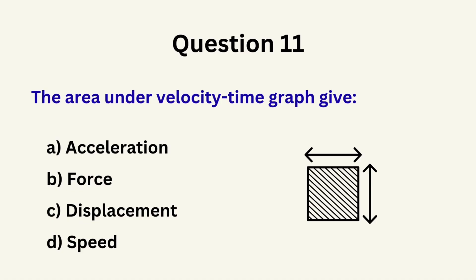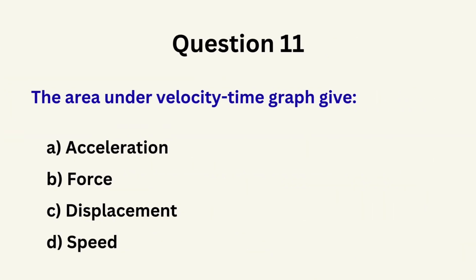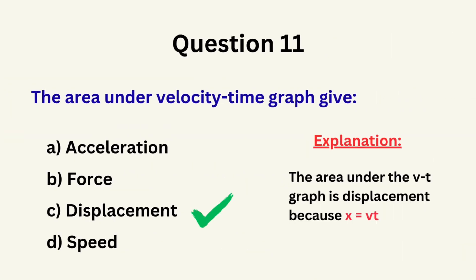Question 11: The area under the velocity-time graph gives... A. Acceleration, B. Force, C. Displacement, D. Speed. The correct answer is C: displacement.